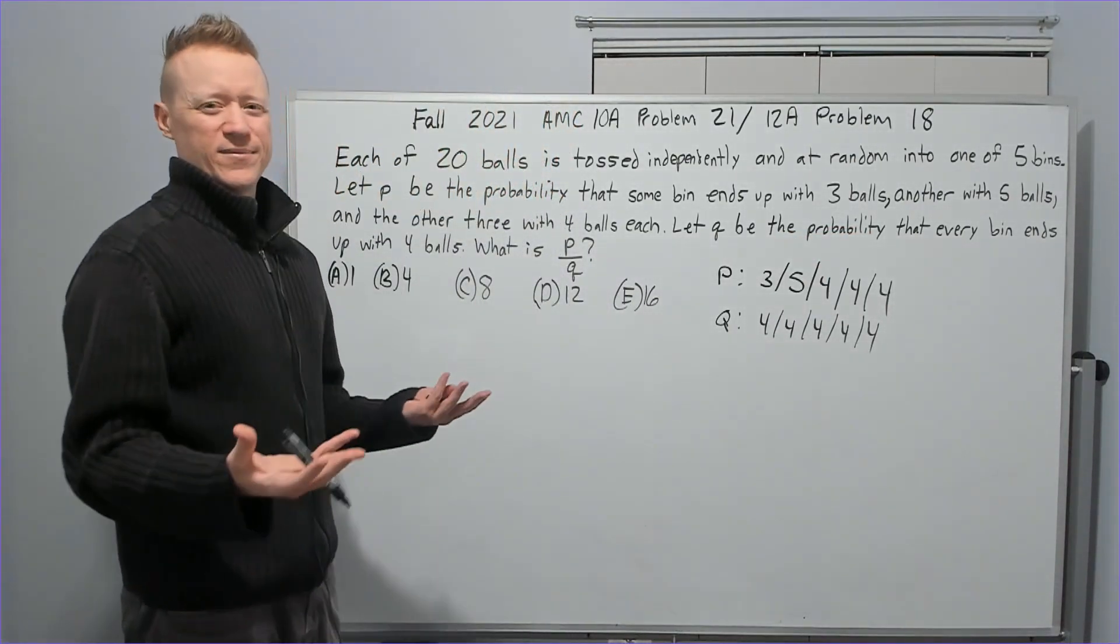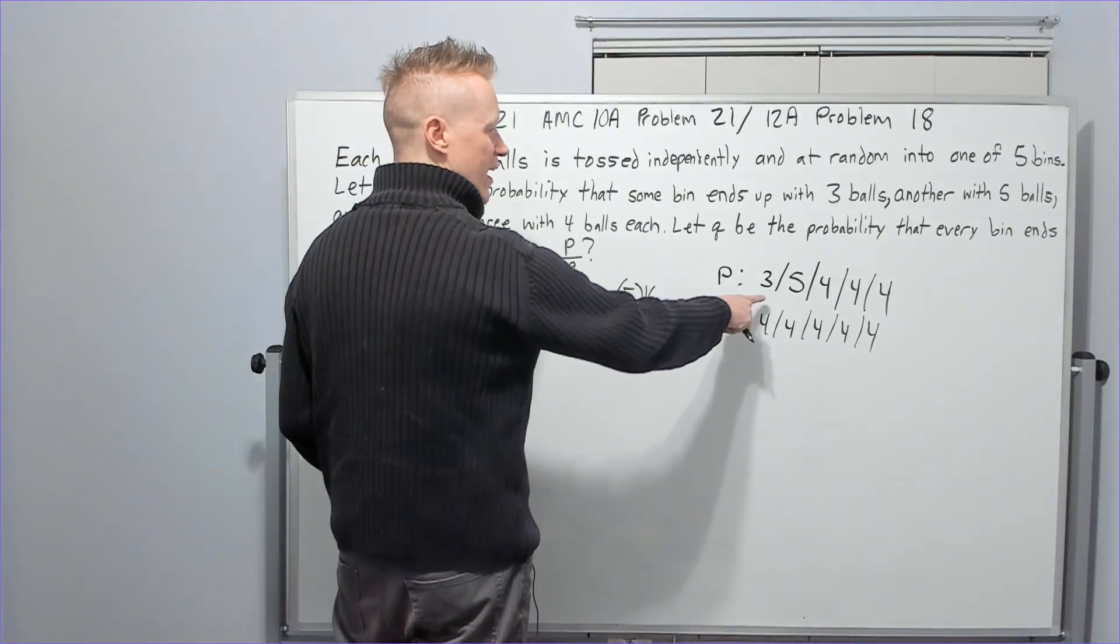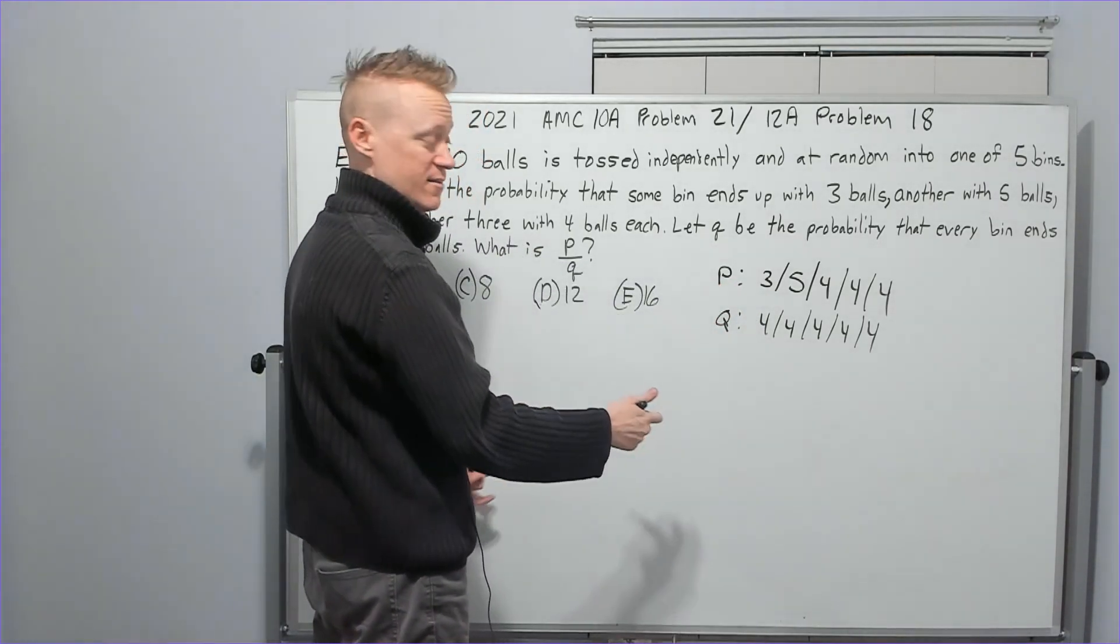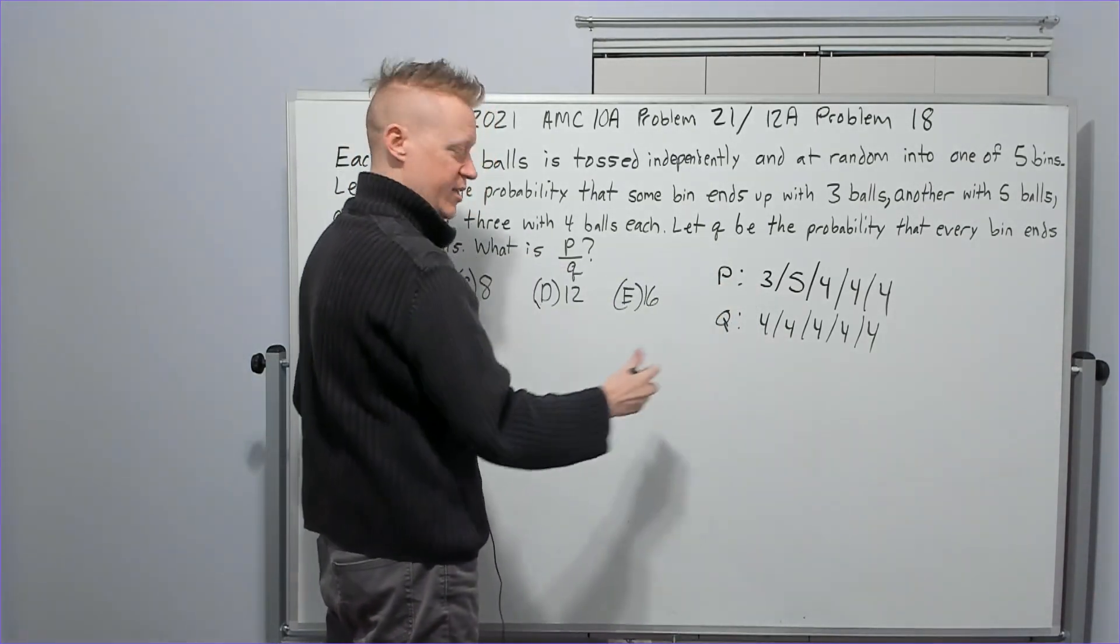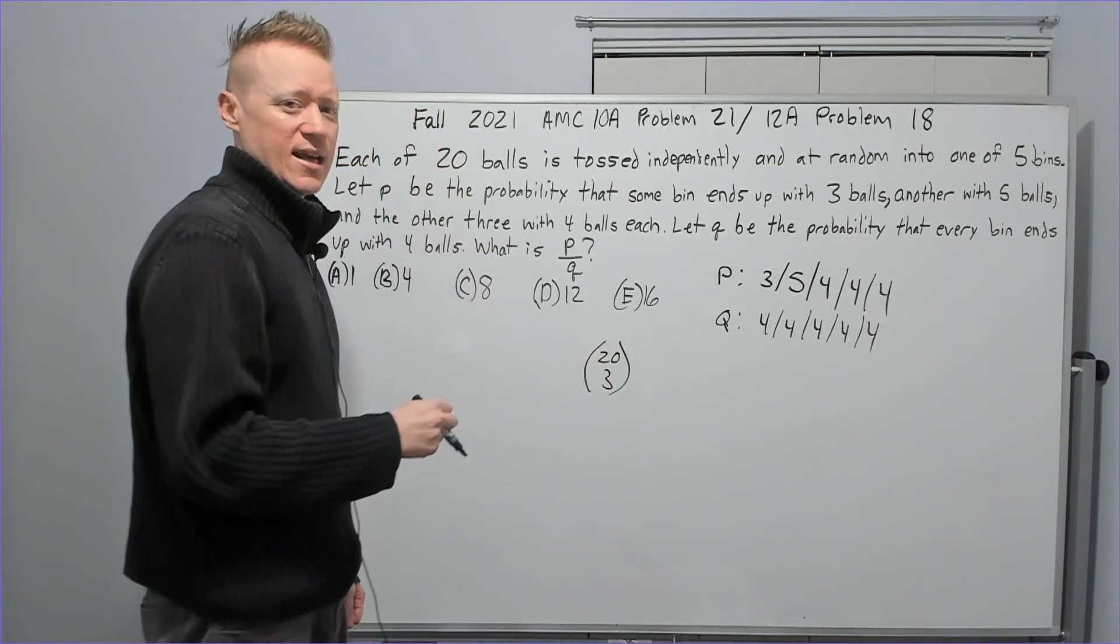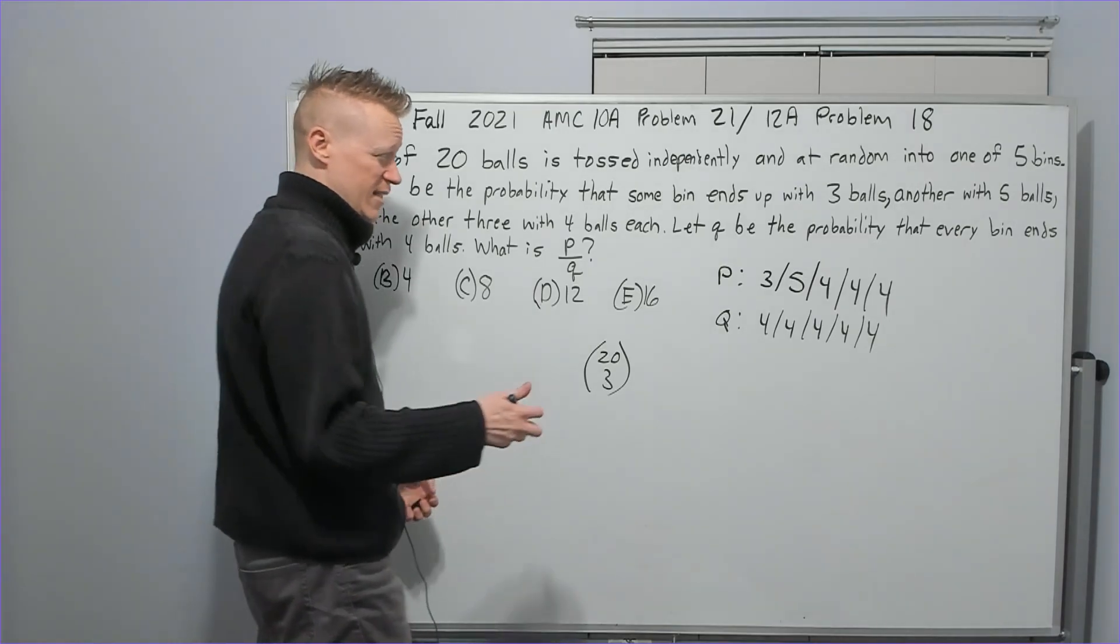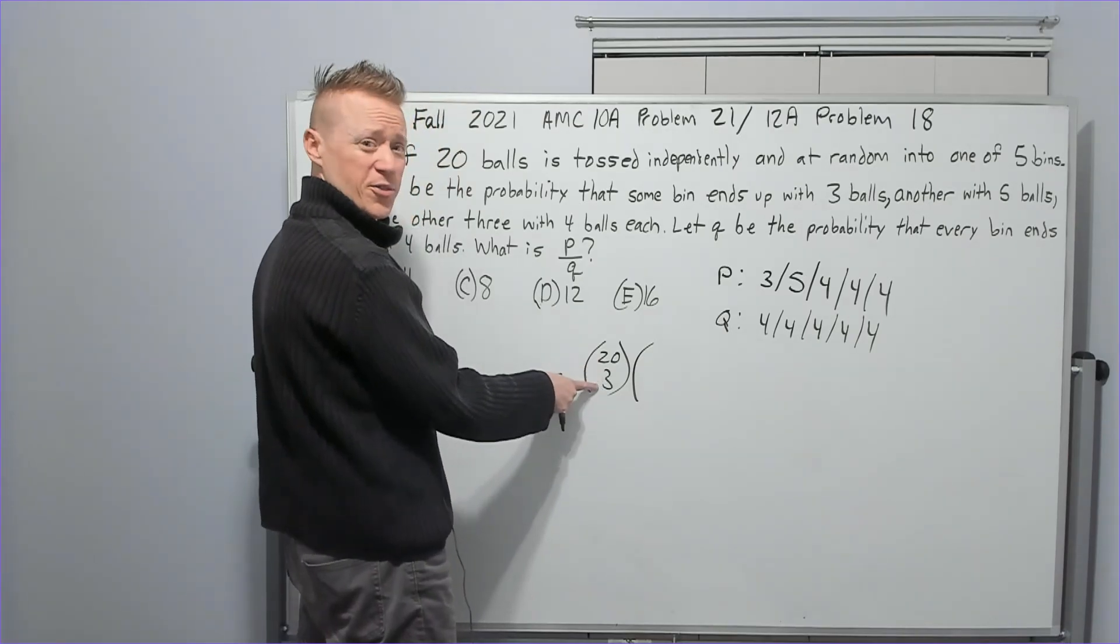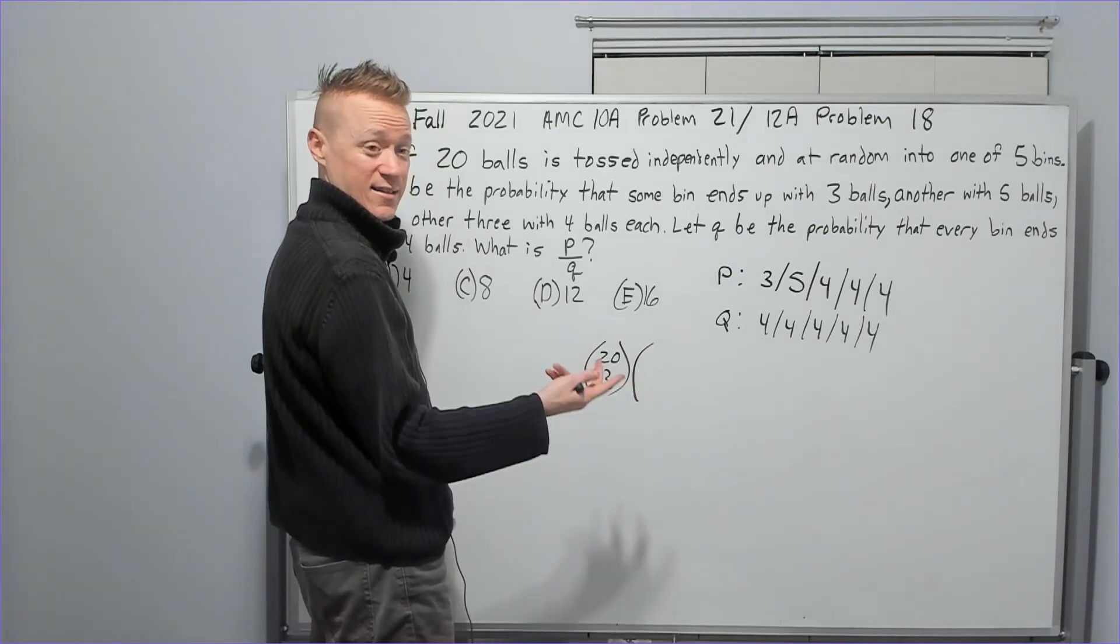Then what? Q is the probability that every bin ends up with four balls and it wants the ratio of P to Q. Okay, so Q, four, four, four, four, and four. So again, I thought stars and bars would work. Like I said, didn't work out. So what I said next was, okay, since I can't get that to work, we got to try a different approach. Let's say, I just choose how many I want to, or which ones to go in this bin.